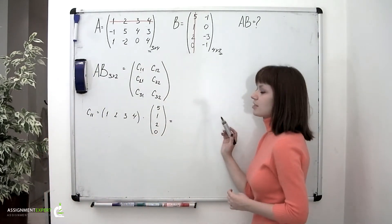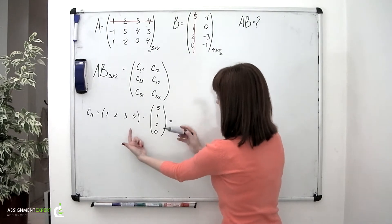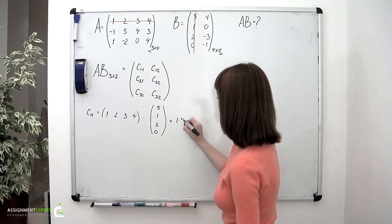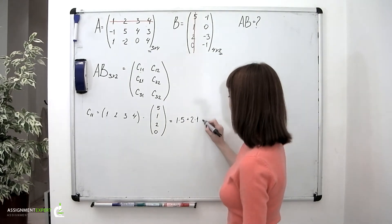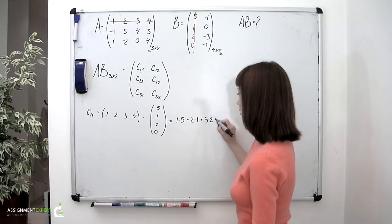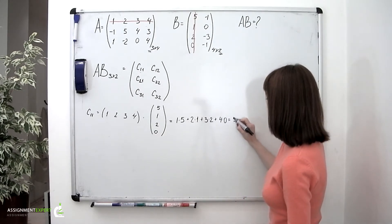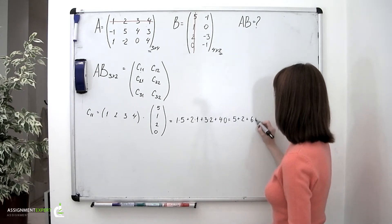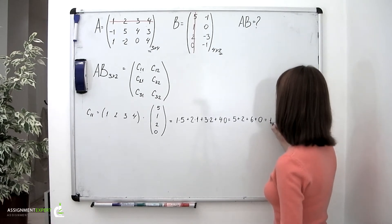Now we'll find the sum of the products of these elements. It goes: 1 times 5, plus 2 times 1, plus 3 times 2, plus 4 times 0, which equals 5 plus 2 plus 6 plus 0, which is equal to 13.